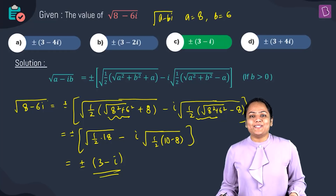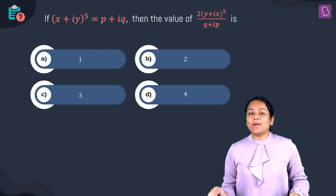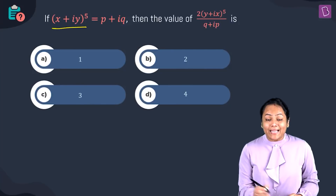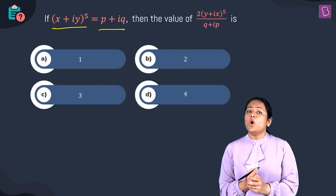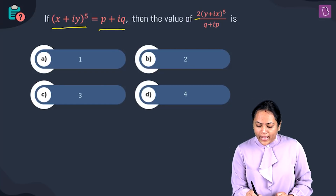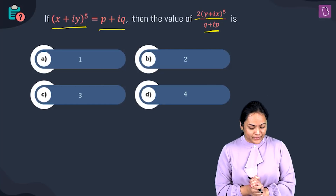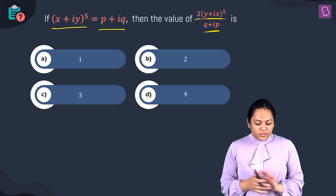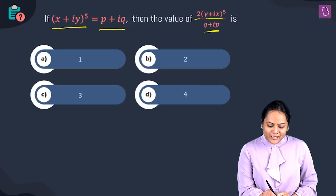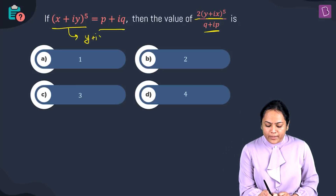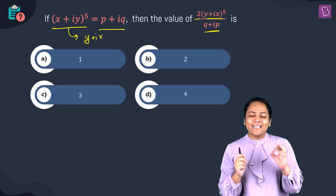Moving on: if (x + iy)^5 equals p + iq, then what is the value of 2(y + ix)^5 divided by (q + ip)? Options are given. The key is to think: from x + iy, can we generate a term like y + ix? Yes, we can.